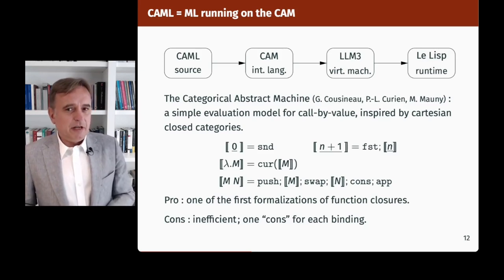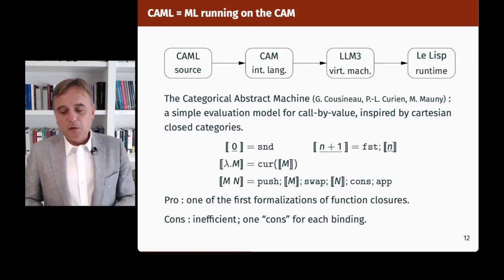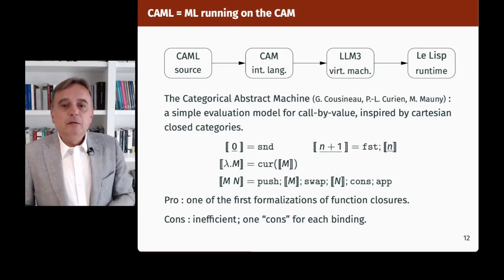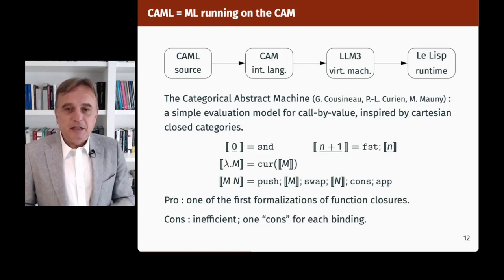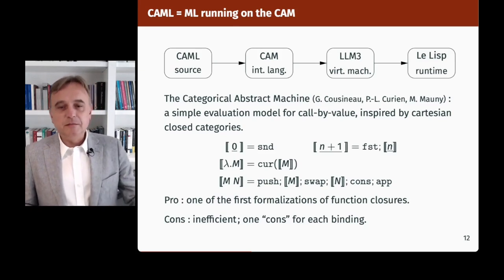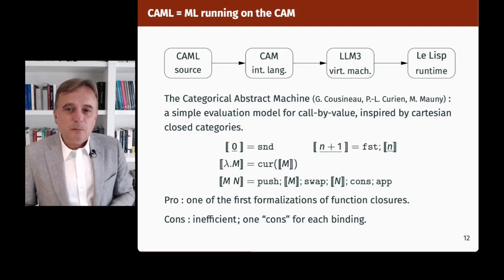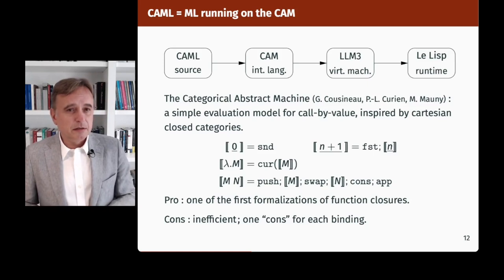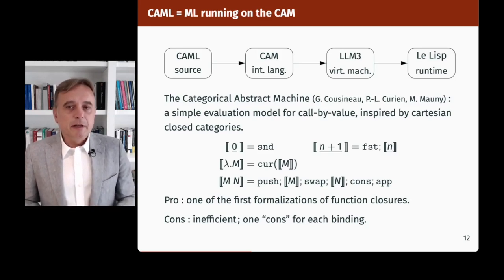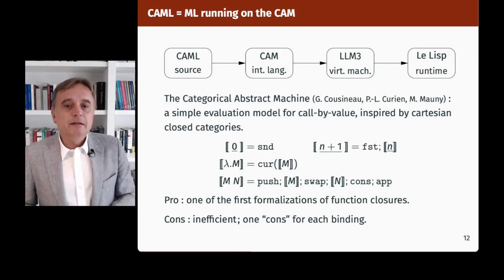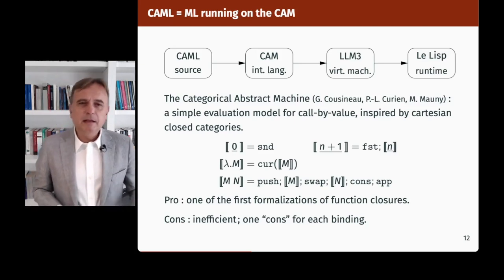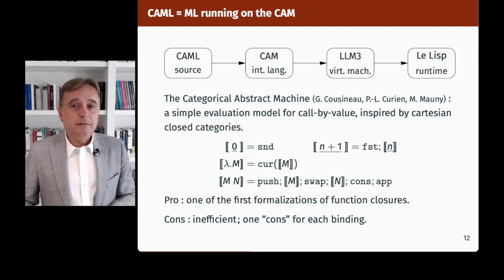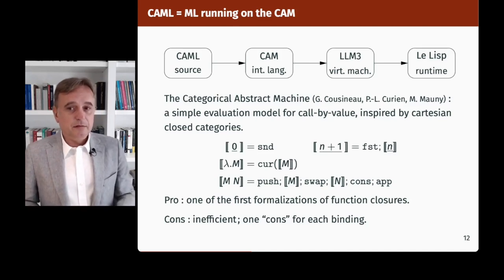The CAM is a simple evaluation model for call-by-value, inspired by Cartesian closed categories. It was one of the first formalizations of function closures — before, function closures were well known just as an implementation device for first-class functions, but here they were connected with a bit of theory. What was disappointing with the CAM is its lack of performance: each let-binding or function parameter being passed would result in a cons — a heap-allocated cell — and the environment would have the structure of a list, so no constant-time access.